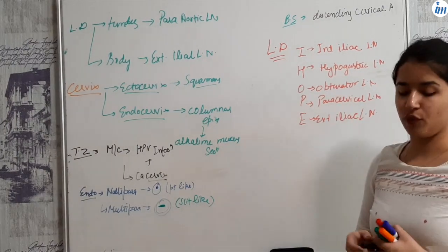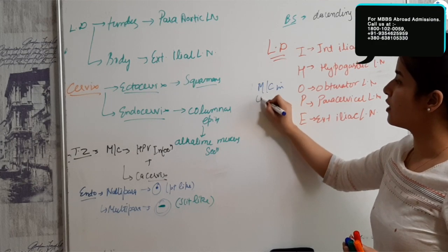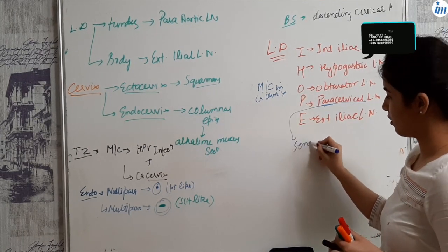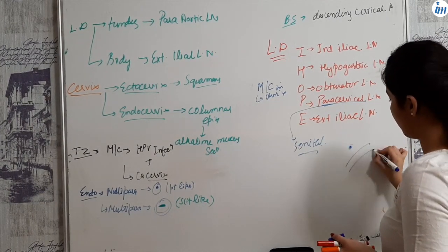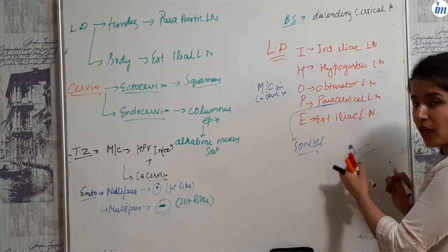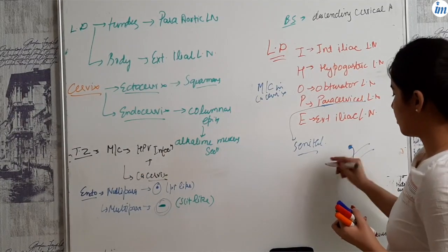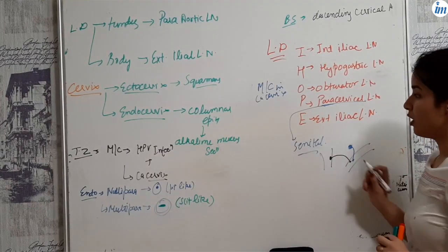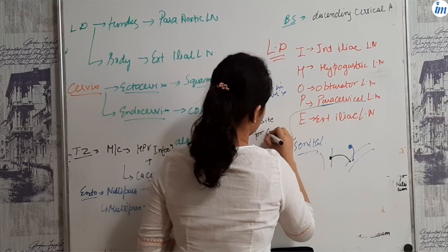Generally, the obturator lymph nodes are the most commonly involved in CA cervix. And the paracervical are the sentinel lymph nodes. Sentinel lymph nodes are those that the organ directly drains into. If it is cancer in the cervix, the first site to be infected is the paracervical lymph nodes. So they are the first site for CA cervix.